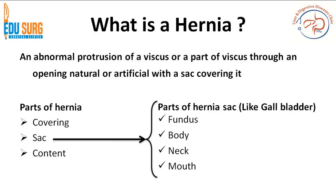What are the parts of hernia? From this definition, there is a cover which is usually the abdominal wall layers — for inguinal hernia it will be the abdominal wall layers. There is a sac which is the peritoneal covering, and then there are the contents of the hernia which can be intestine, omentum, or many other things as we will see.